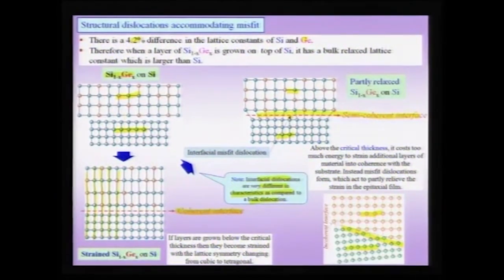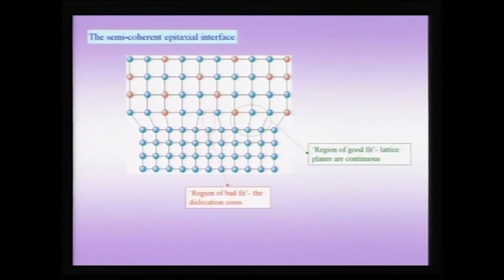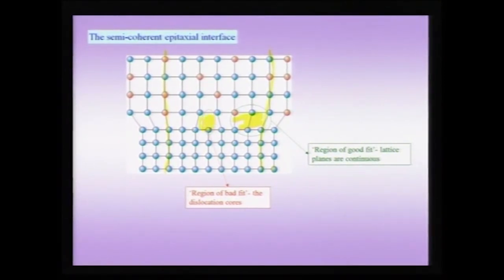To summarize: there are structural dislocations which can accommodate linear misfit. Such dislocations are like the low angle grain boundary dislocations, localized to the interface, and here they perform the role of partly relieving the stresses caused by the lattice mismatch between the GeSi alloy and the silicon substrate. Based on coherency, you can have coherent interfaces, semi-coherent interfaces which have dislocations decorating the interface, and in general an incoherent interface. In a semi-coherent interface, as in the case of a low angle grain boundary, there are regions of good fit — with continuous planes from substrate to film — separated by dislocation cores.